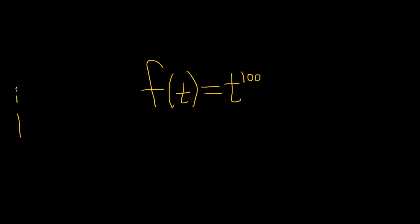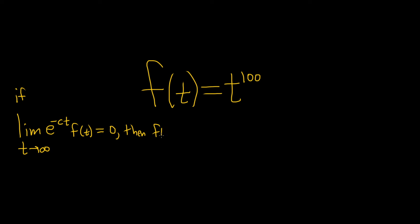It says that if we take the limit as t approaches infinity of e to the negative ct times f of t, and this limit is equal to 0, then we can say f of t is of exponential order.